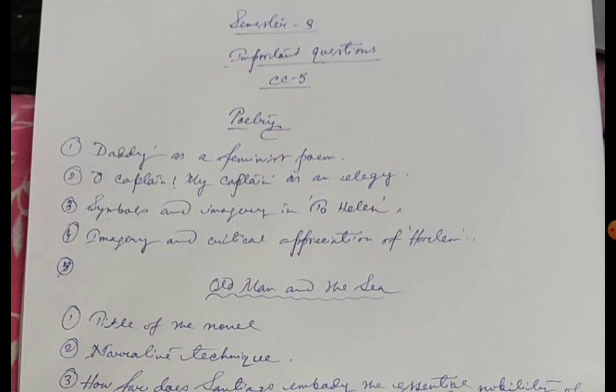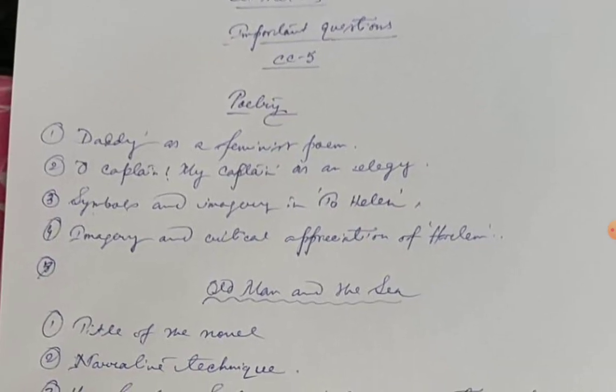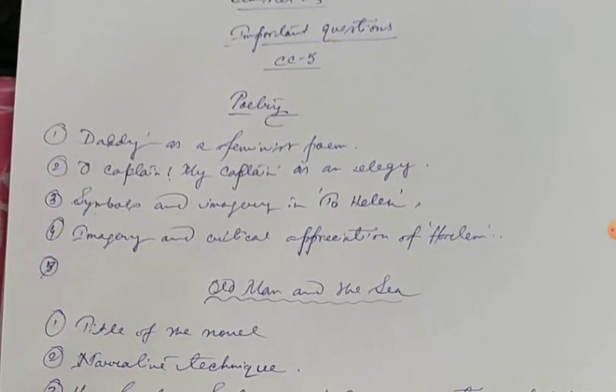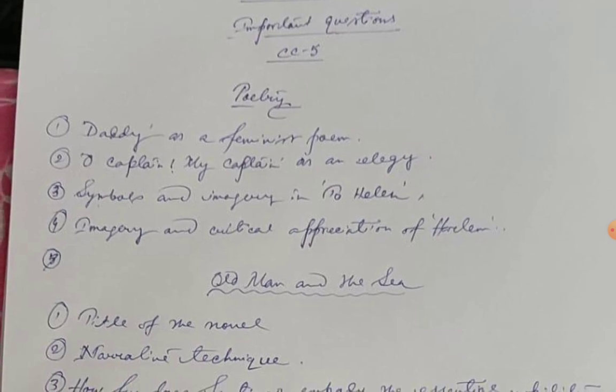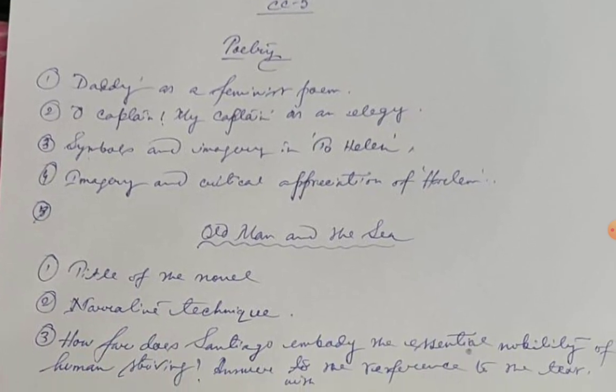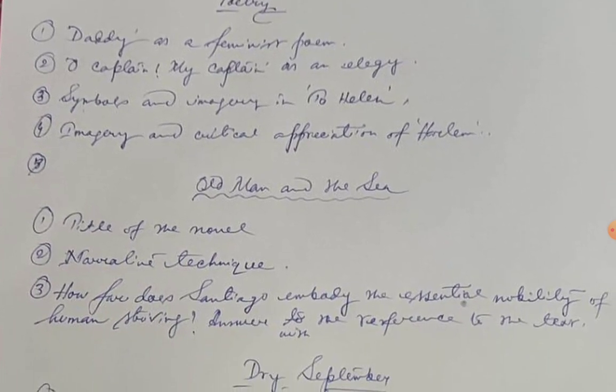CC5 questions from the poetry section: number one, 'Daddy' as a feminist poem; number two, 'O Captain My Captain' as an elegy; number three, symbols and imagery in 'To Helen'; number four, imagery and critical appreciation of 'Helen'.